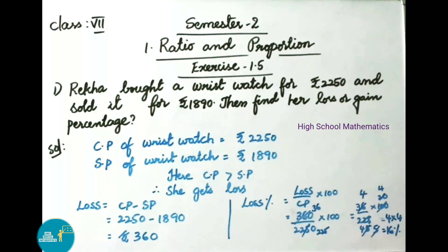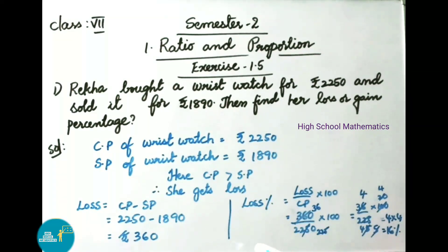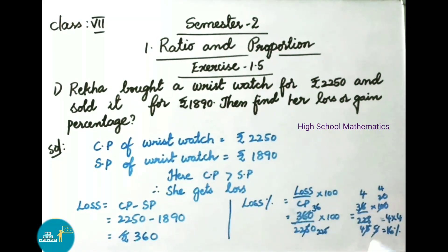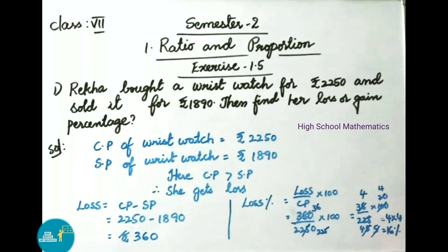Since the question asks for loss or gain percentage, and she got a loss, we find loss percentage. Loss percentage equals loss by cost price into 100, that is 360 by 2250 into 100. Simplifying: 36 by 225 into 100, further reducing gives 4 by 25 into 100, which equals 16 percent. Therefore she got a loss percentage of 16 percent.